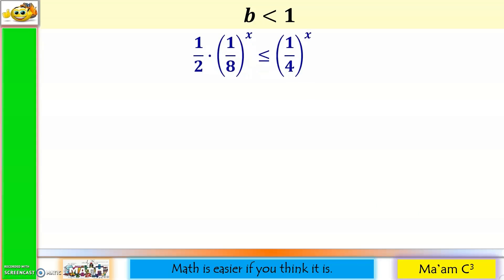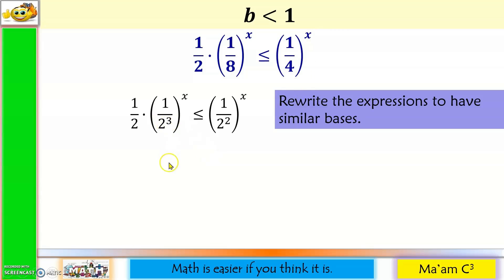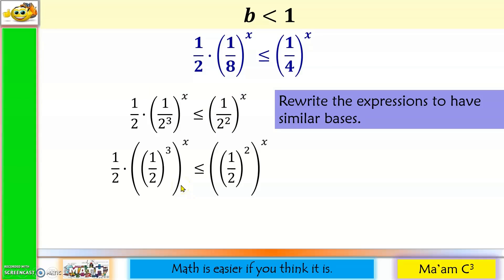Now let's have base less than 1. Since the exponential expressions are already isolated on both sides, I'll proceed to step 2 and make our bases the same. I have three bases here: 2, 8, and 4. I'll change 8 to 2 cubed and 4 to 2 squared. Since 1 cubed is also 1, I'll make that expression 1 half raised to the third power, and 1 half raised to the second power for the other. Now I'll simplify by multiplying the exponents.